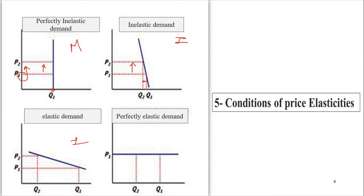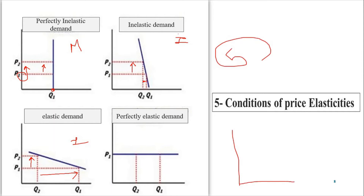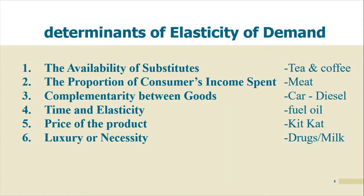An example of elastic demand is ice cream — if the price of ice cream increases even a bit, the quantity demanded will decrease a lot. There is no realistic example of perfectly elastic demand. Unit elastic is a proportional situation: as much as the price increases, that much the quantity decreases. It is a very ideal situation.